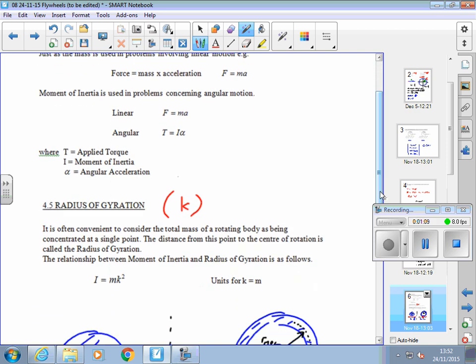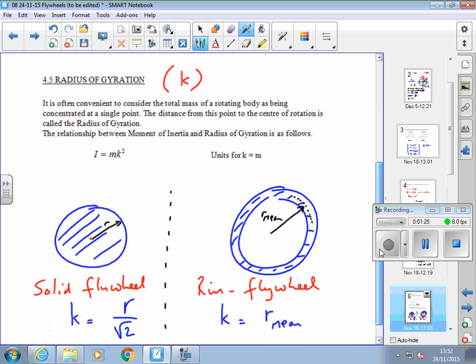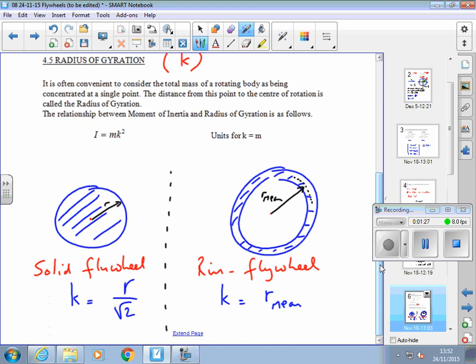Remember when we talked about bending moments on beams? We discussed the bending equation and something called a second moment of area, which allows us to consider the shape of the object. There's a similar thing called a radius of gyration for flywheels. So we can consider flywheels.